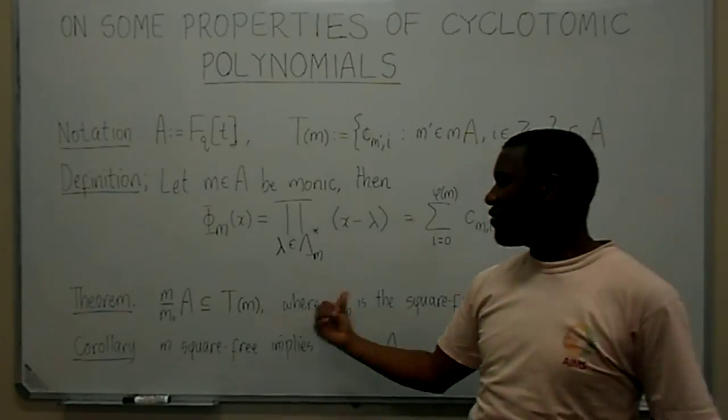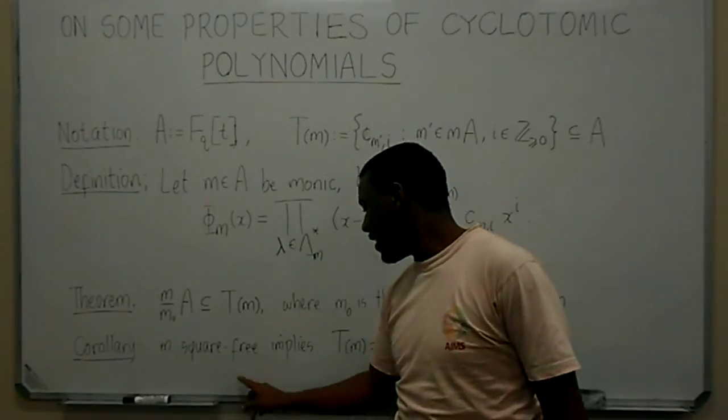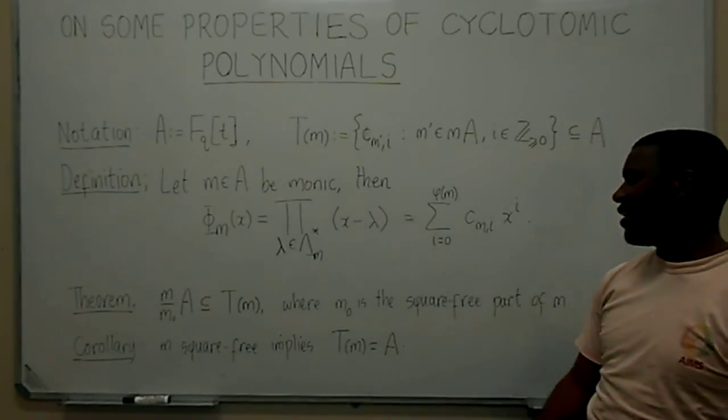Now, as a consequence, if the M that you chose before is square-free, then TM is the entire ring A.